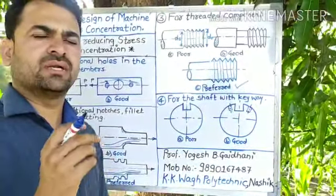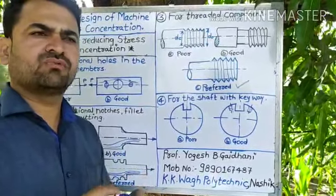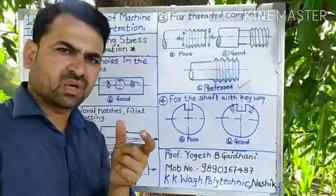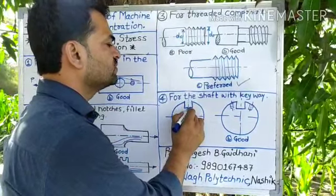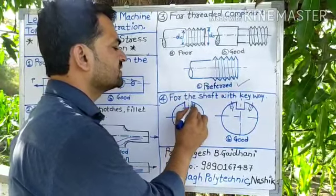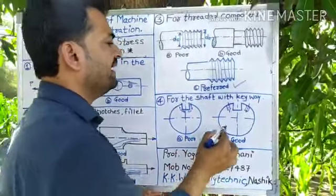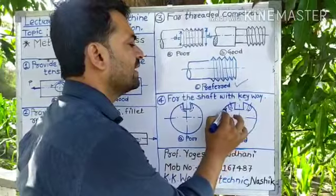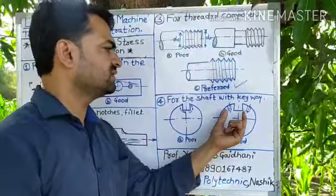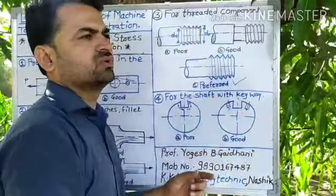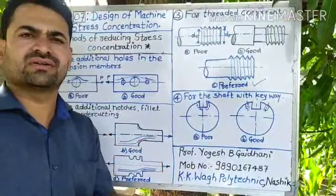The fourth method reduces stress concentration on a shaft with a keyway. When a shaft is used for power transmission, we provide a slot — a keyway — on the continuous shaft, which leads to stress concentration near the keyway section. To reduce this, we make a hole near the slot portion, and this leads to reduced stress concentration. That is how we can reduce stress concentration in a shaft with a keyway by providing additional holes.